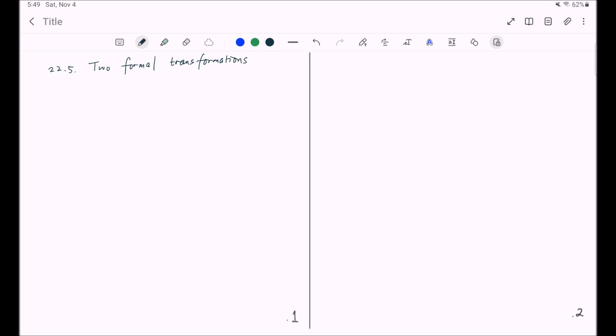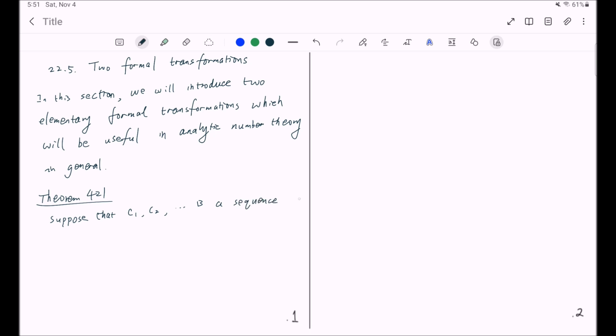In this section, we are going to introduce two formal transformations in calculus, which will be useful in general in analytic number theory. And we will summarize them as theorem 4.21. Suppose that c₁, c₂, etc. is a sequence of numbers, that the function c(t) means the summation of c_n from n less than or equal to t, and that f(t) is any function of t.